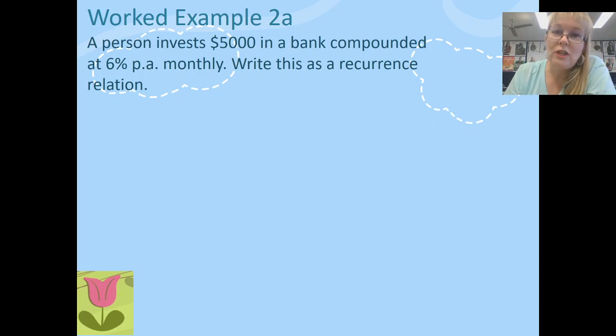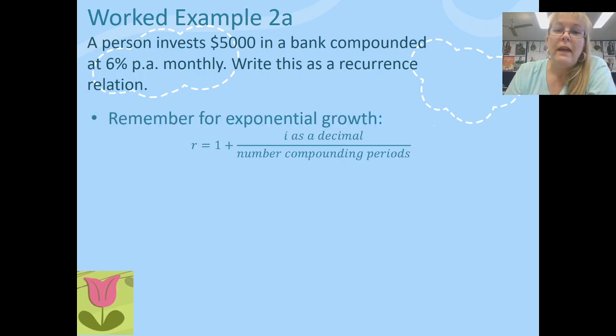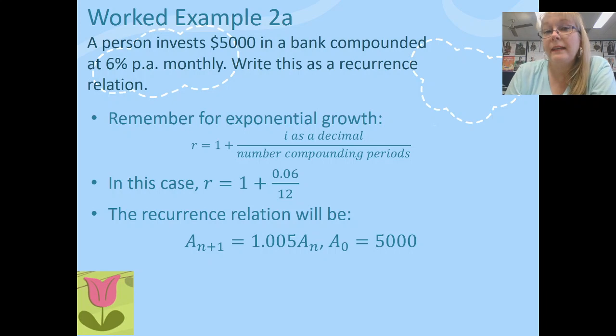The main thing that's going to change here is that value for our interest rate. Remember the formula for that was i as a decimal, 0.06. And we have to divide that by the number of compounding periods. Well now there's 12. So my formula for r becomes 1 plus 0.06 over 12. And when I put that into my calculator, I find the value for r is going to be 1.005. Nothing else in the recurrence relation will change from our previous question.